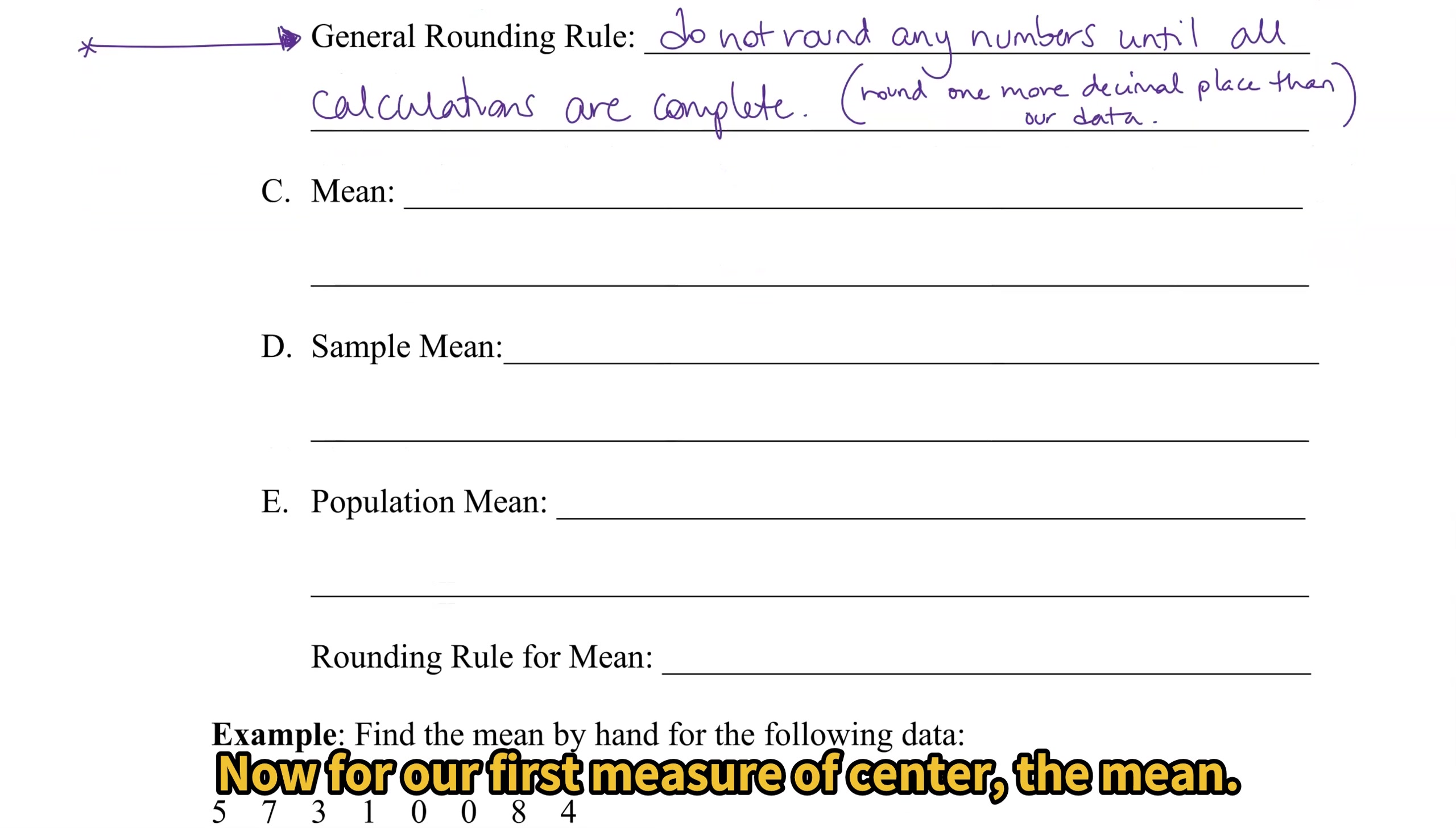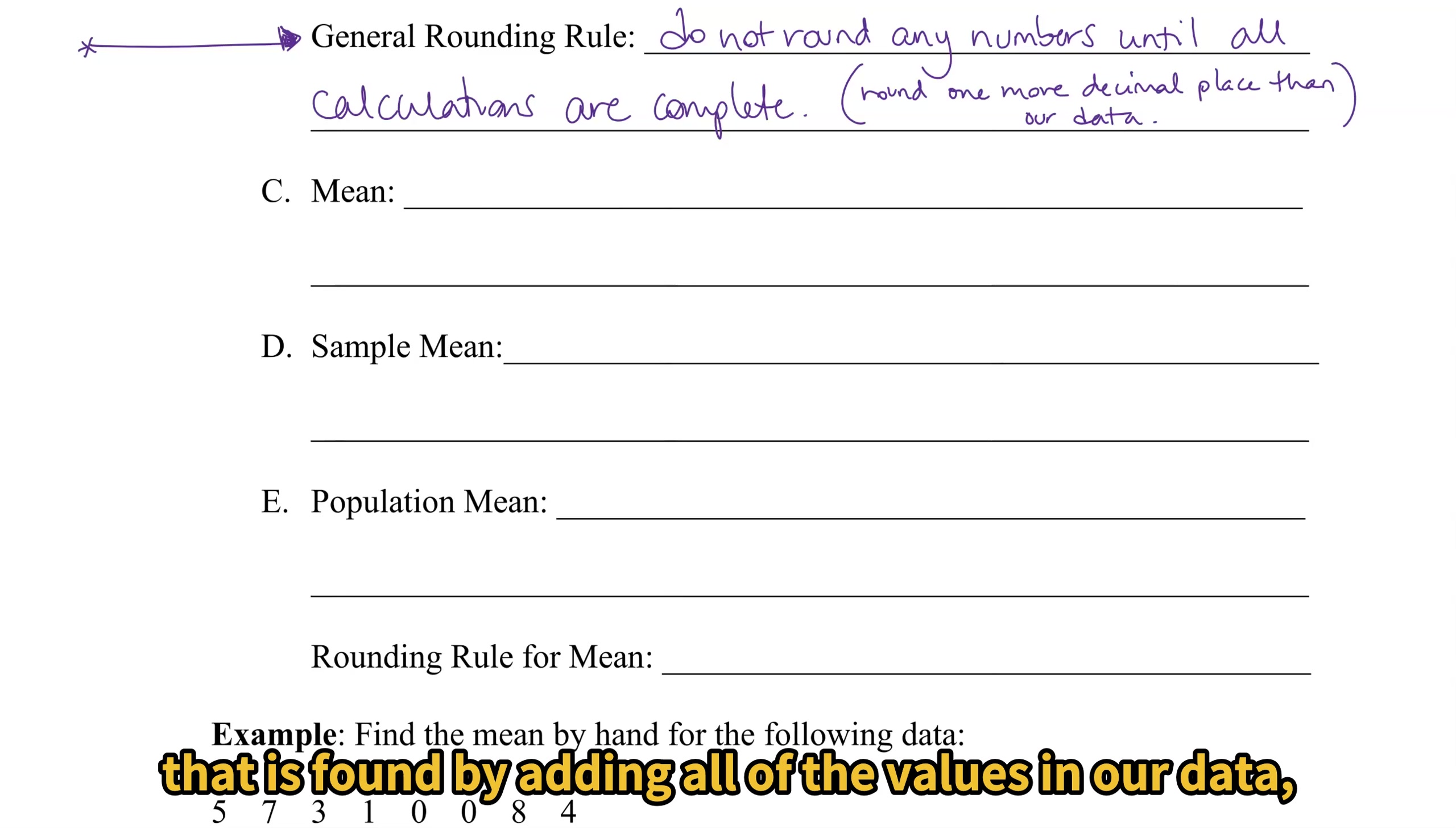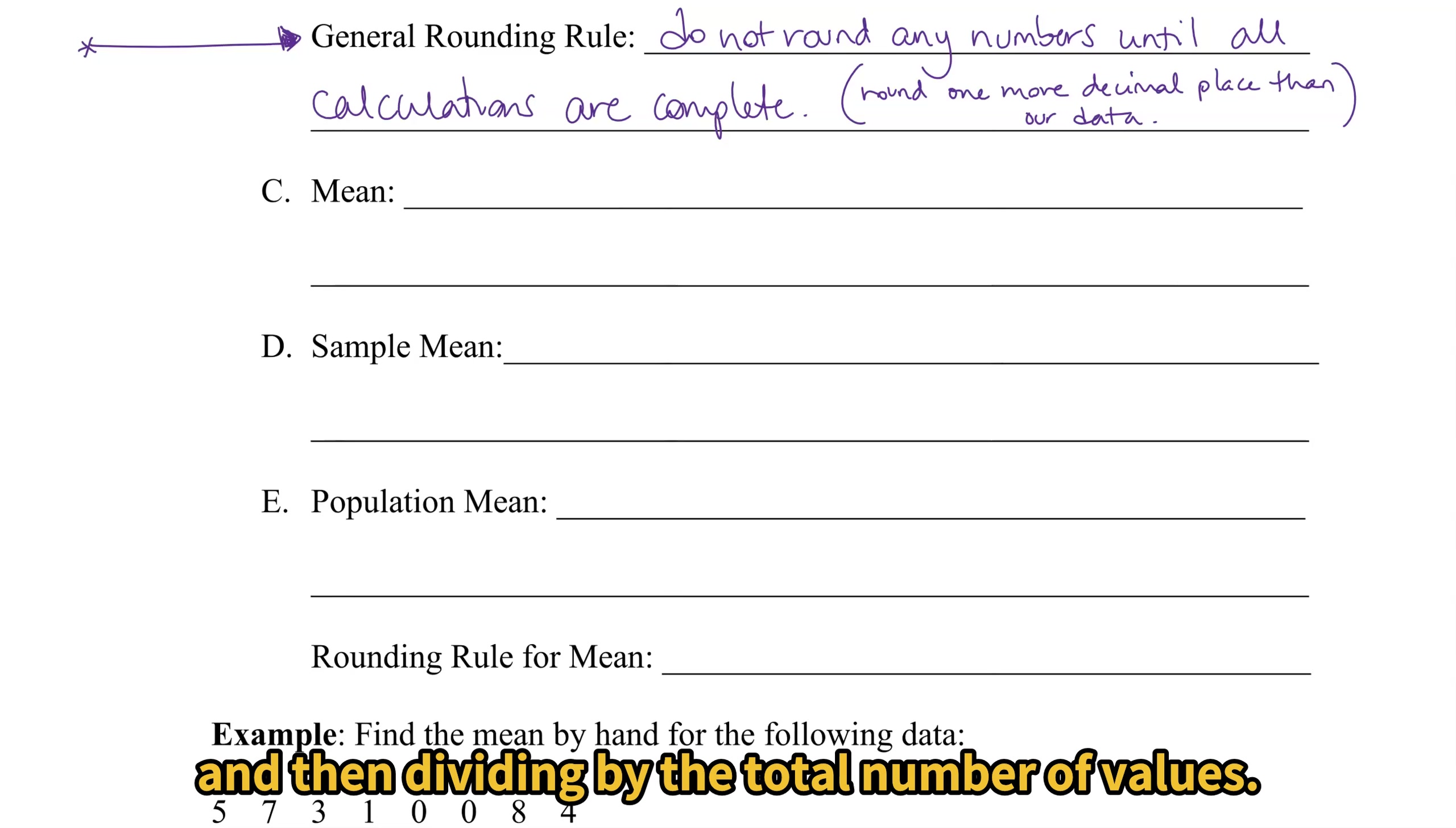Now for our first measure of center, the mean. The mean is a measure of center that is found by adding all of the values in our data, and then dividing by the total number of values.